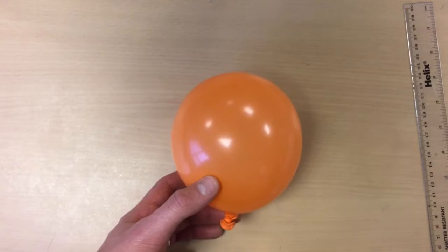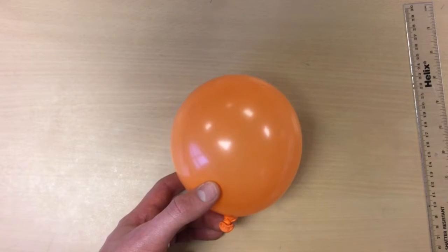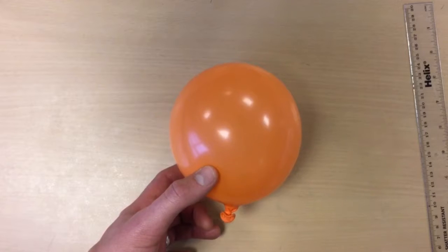So this is what the balloon should look like and I've done a wee knot at the bottom to stop any air from coming out. Now the next stage is to put our galaxies onto the balloon.